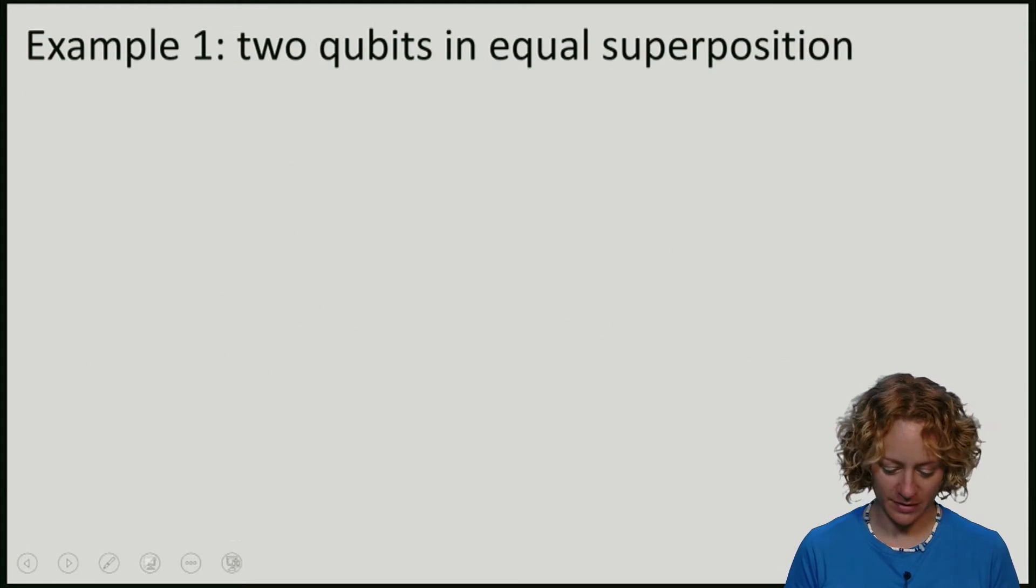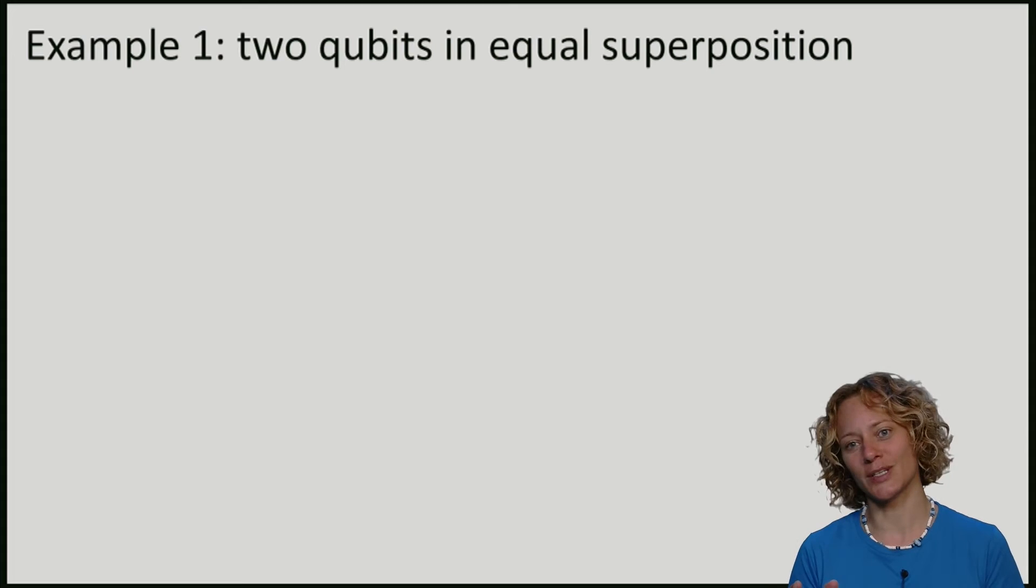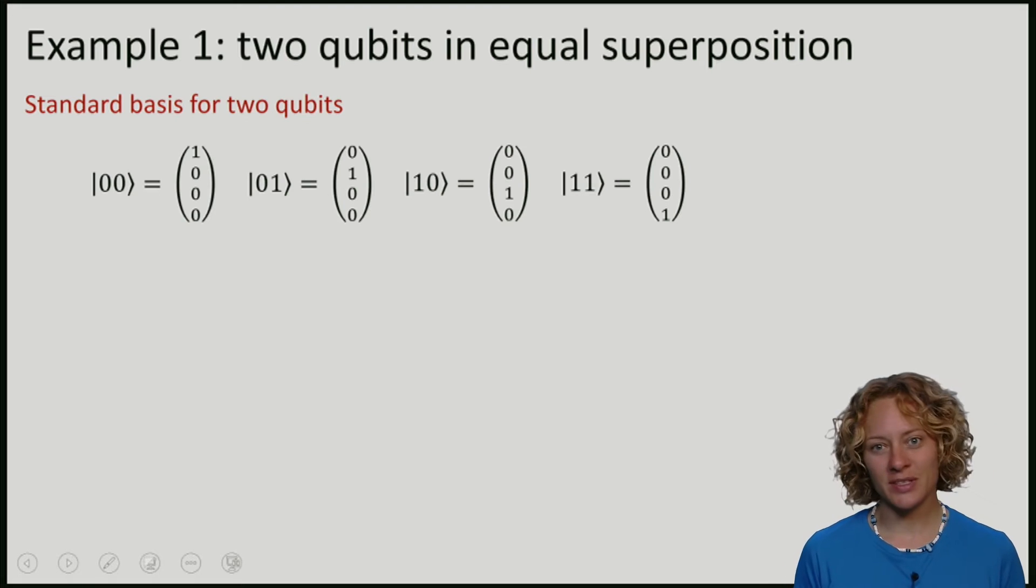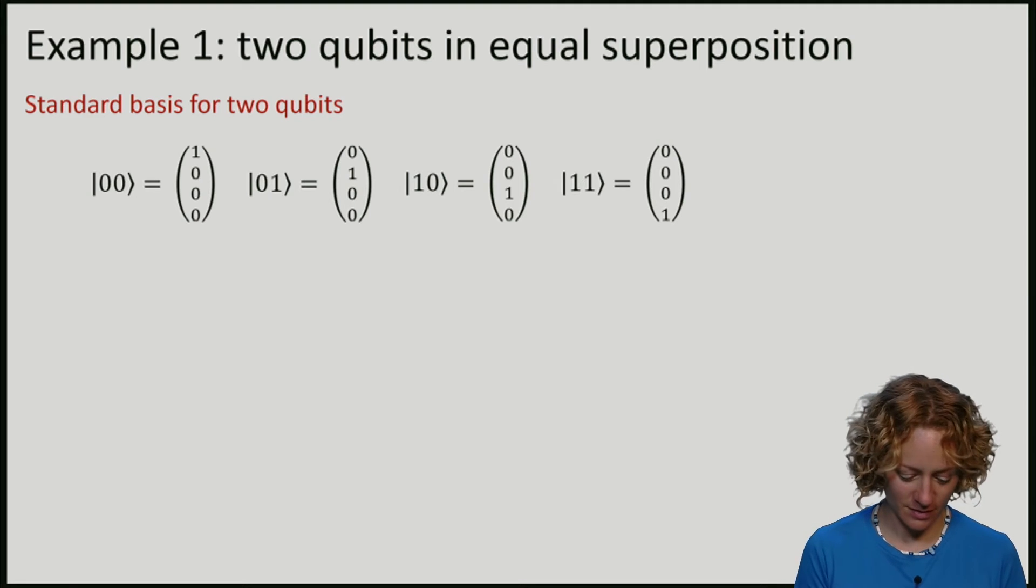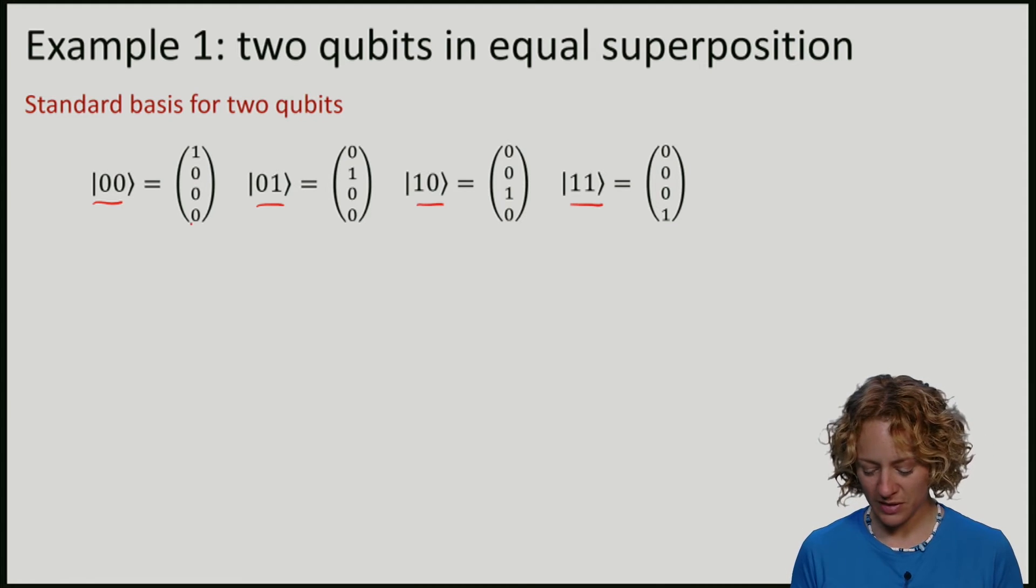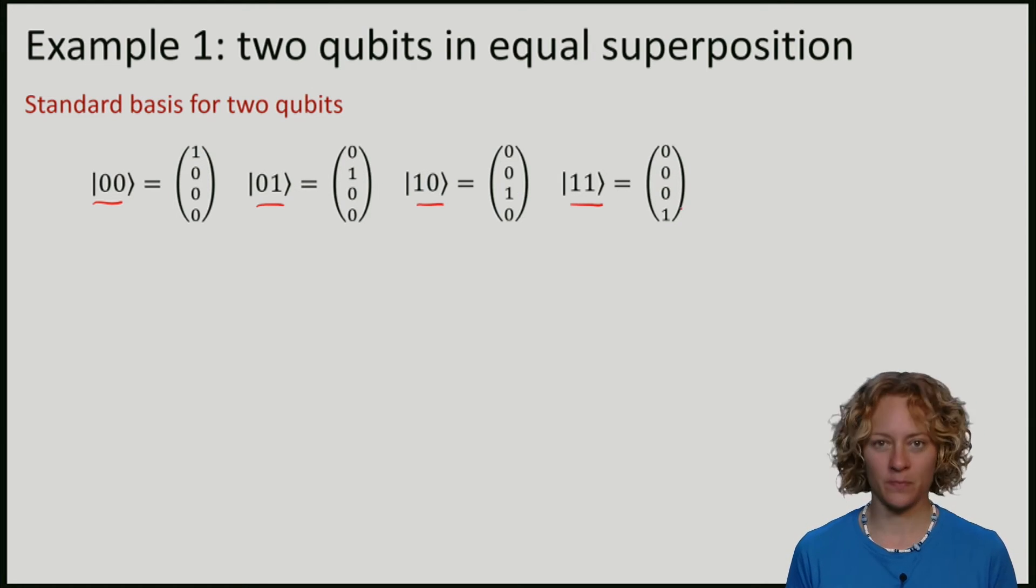Let's have a look at some examples. For two qubits, we have n equals 2, and we have four possible classical strings: 00, 01, 10, and 11. With each of these, we will associate a vector. These four vectors define the standard basis. We have numbered the strings, and we have put a 1 at the position corresponding to that string.